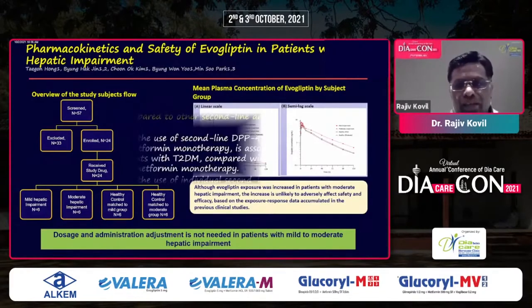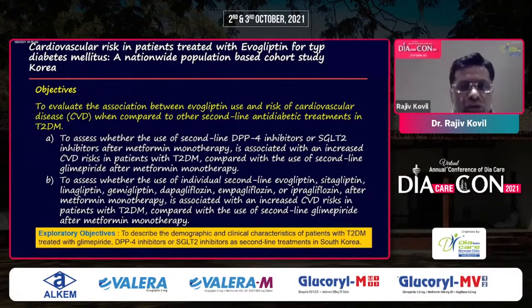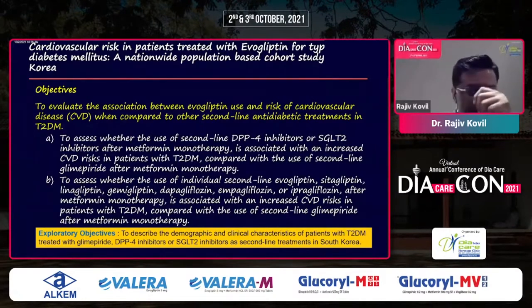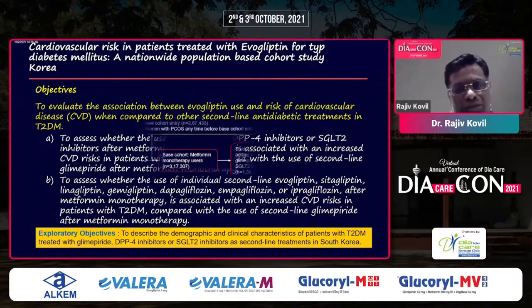Looking at this nation-based cohort study in South Korea — a retrospective study — the idea was to evaluate the association between the use of evogliptin and other DPP4 inhibitors and the risk of cardiovascular disease when compared to other second-line anti-diabetic drugs. It is a large study.